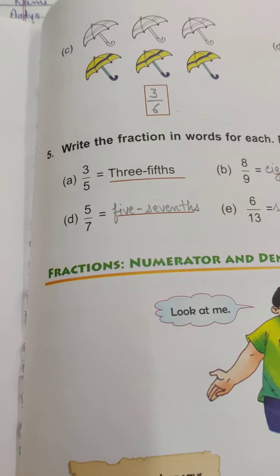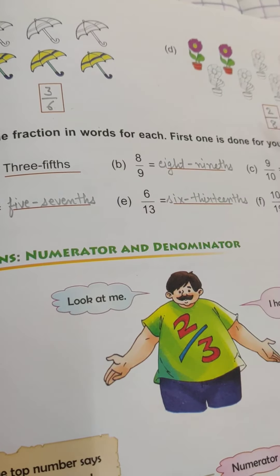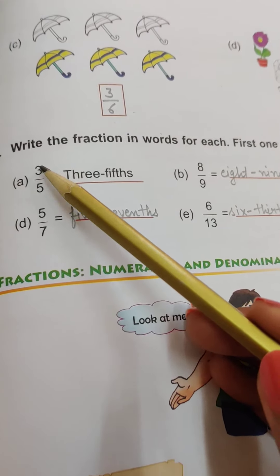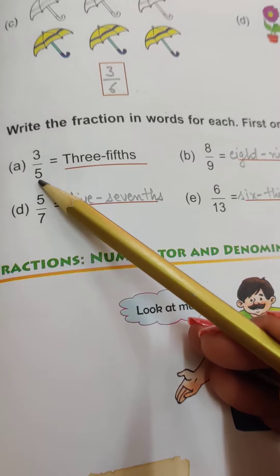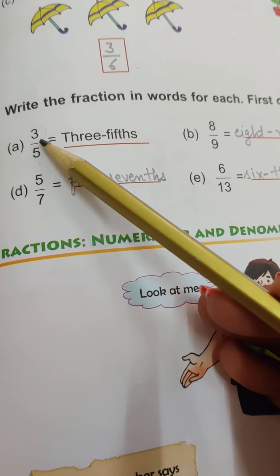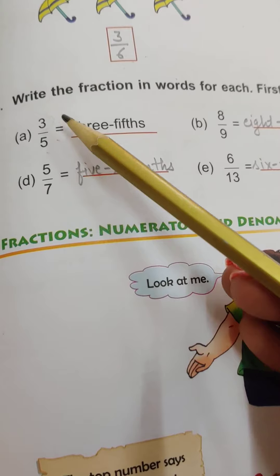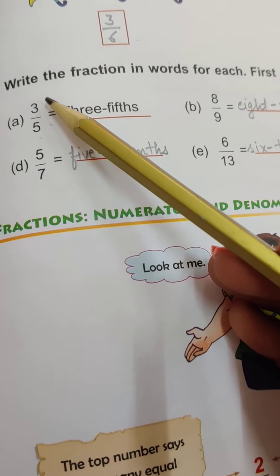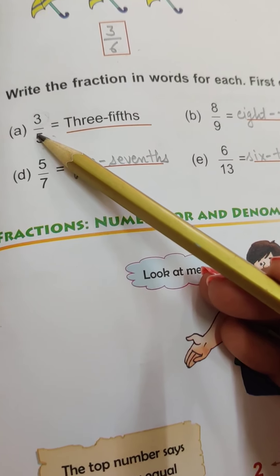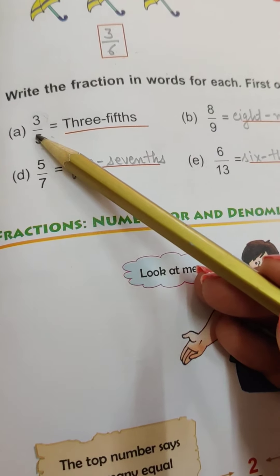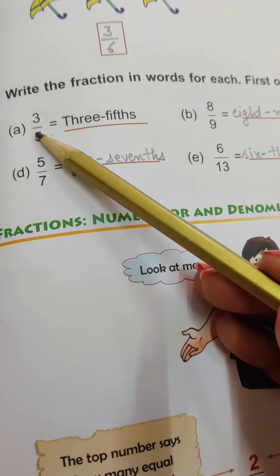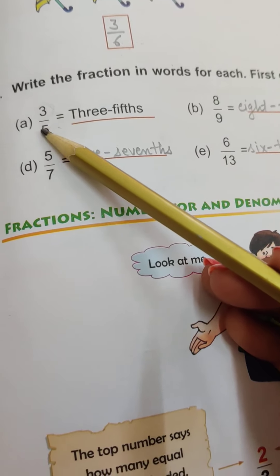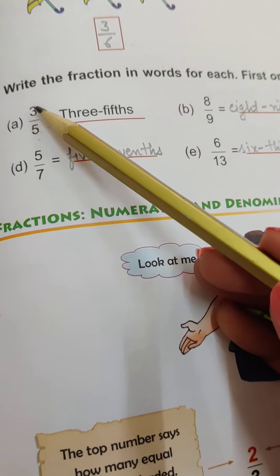Next question, question 5. Write the fraction in words for each. First one is done for you. We have to write them in words. How to write them? See, 3 by 5. Now, 3 by 5, I have told you, the upper term is numerator and the lower term is denominator. So numerator is simple, we say 3 is 3, 2 is 2, 7 is 7. But the denominator term, 5, we don't call 5 as ordinal. Five-fifths, 7 is seventh, 9 is ninth. As an ordinal, the denominator number will be called.